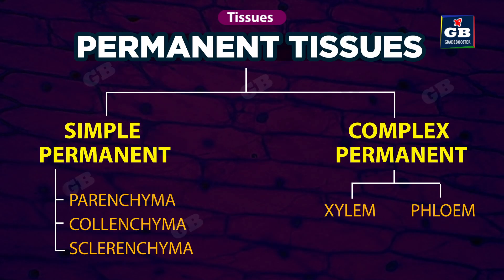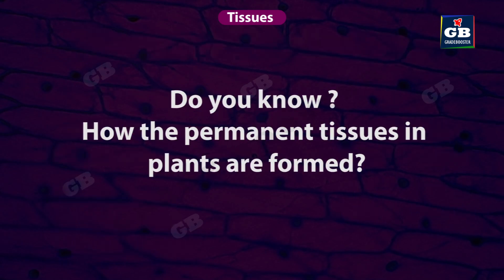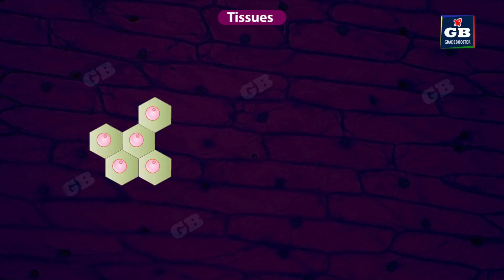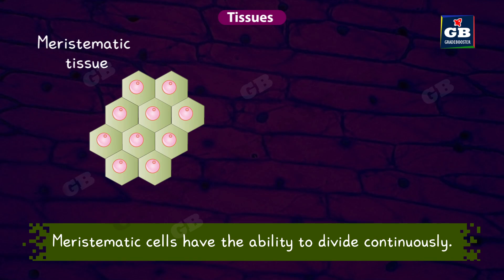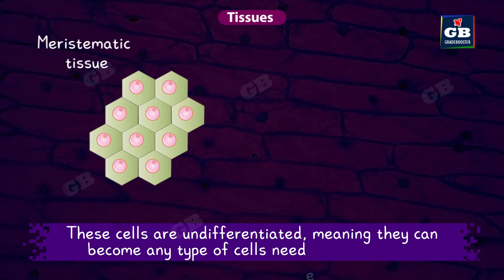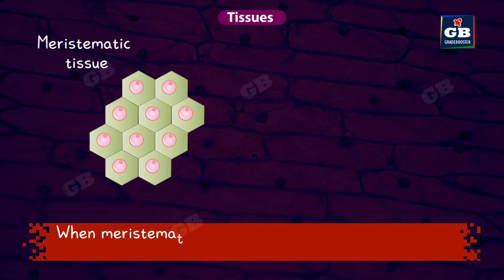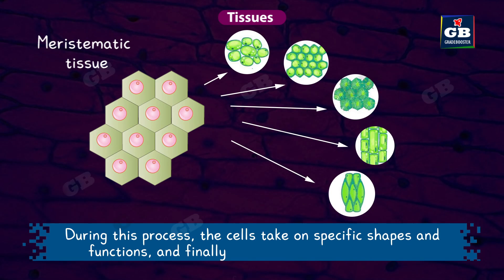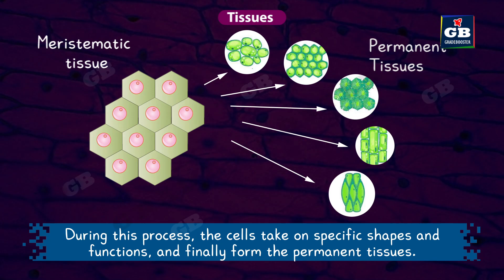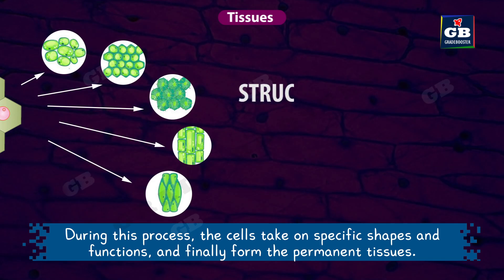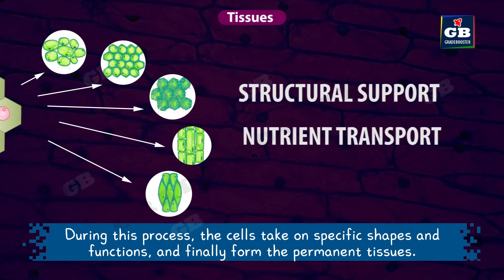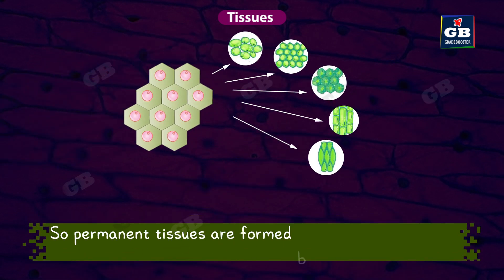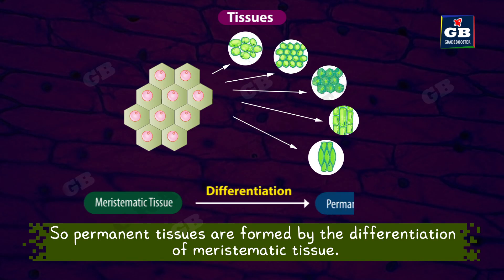Now let us learn about permanent tissues in plants. Meristematic cells have the ability to divide continuously and are undifferentiated, meaning they can become any type of cell needed by the plant. When meristematic cells stop dividing, they begin the process of differentiation. During this process, the cells take on specific shapes and functions and finally form the permanent tissues. These permanent tissues then take on specific jobs in the plant, such as giving structural support, nutrient transport, or storage, depending on their type. So permanent tissues are formed by the differentiation of meristematic tissue.